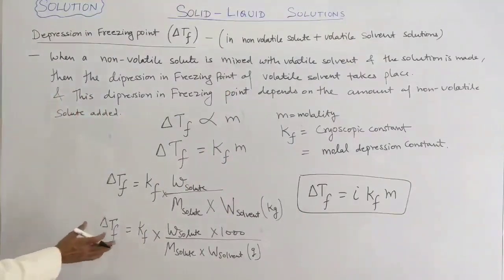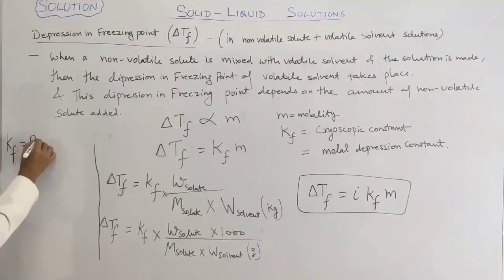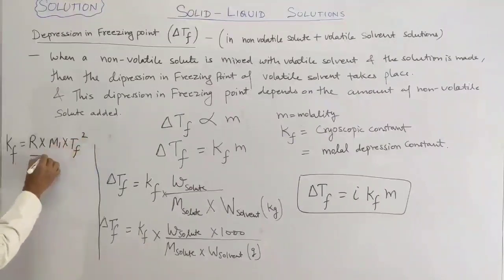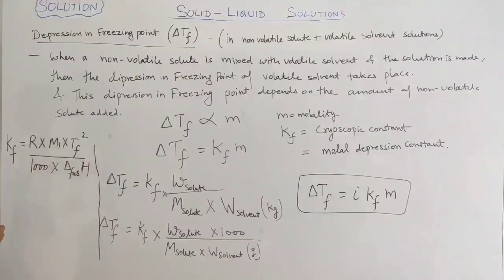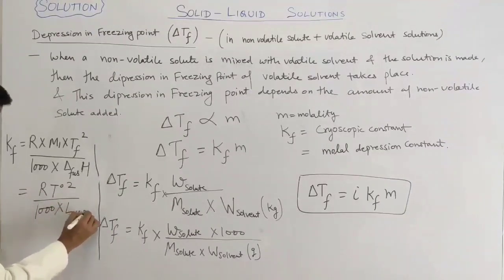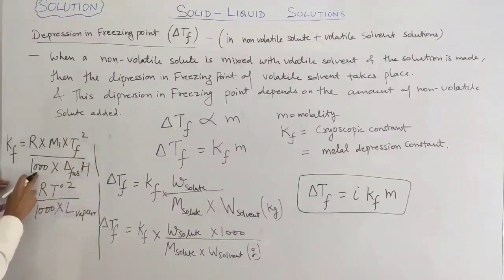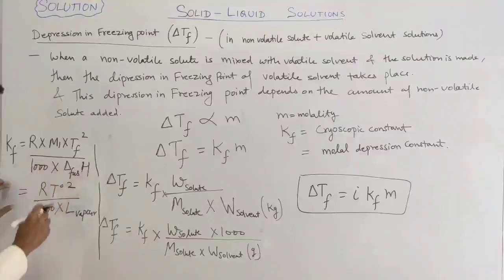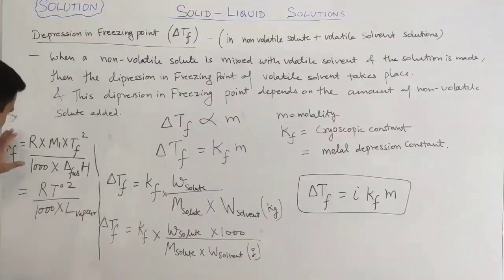One more formula is used to calculate Kf, the cryoscopic constant: Kf equals R times M1 times Tf squared, divided by 1000 times delta H fusion. Or alternatively, Kf equals R times T0 squared divided by 1000 times latent heat of vapours. Here R is the gas constant, M1 is the molar mass of the solvent, Tf is the freezing point of the pure solvent, and delta H fusion is the enthalpy of fusion.